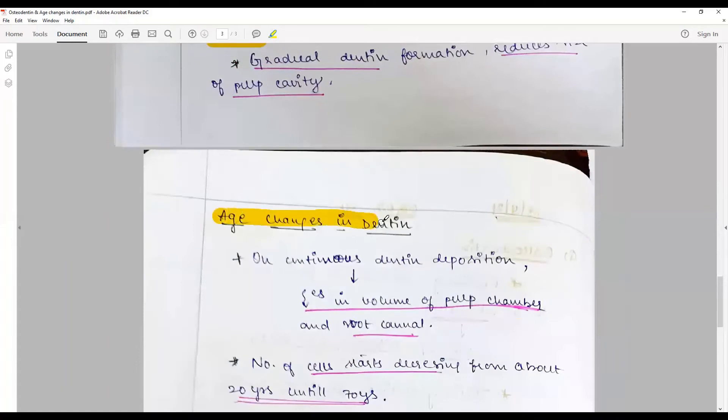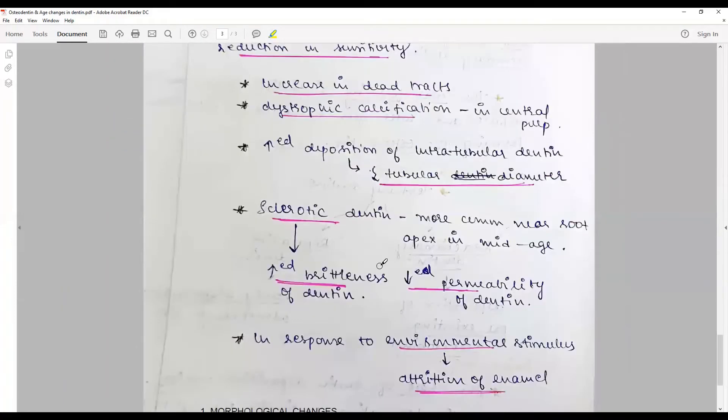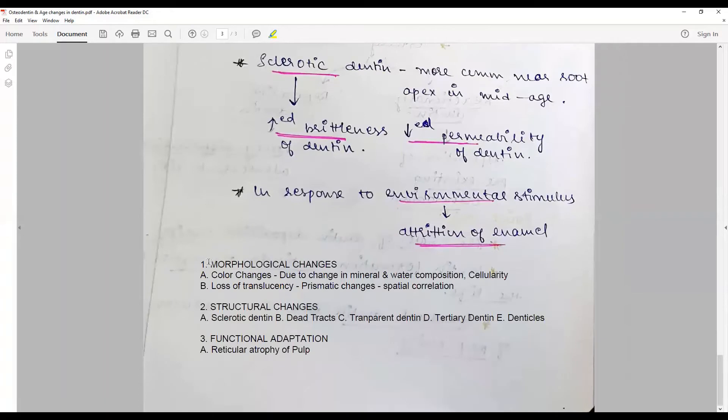In age changes in dentine, you have to classify it. It can be either a morphological change or color change. Morphological change of dentine includes color change and loss of translucency.